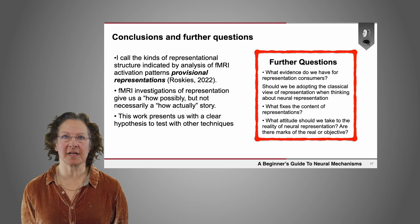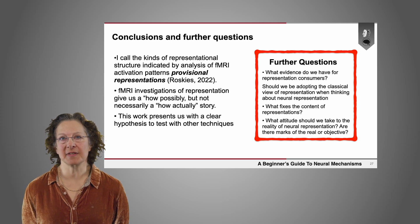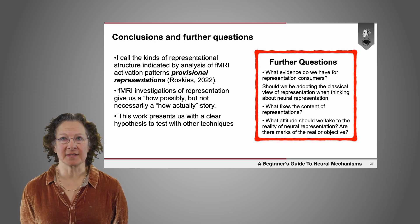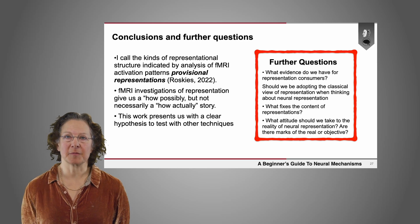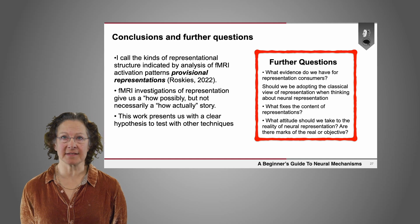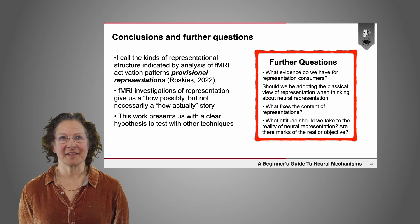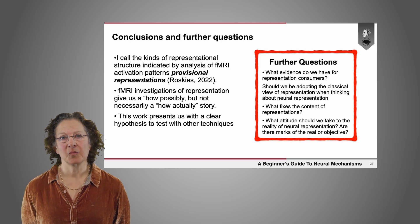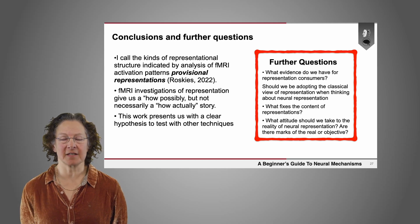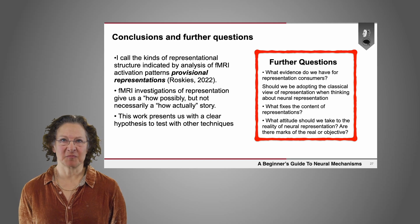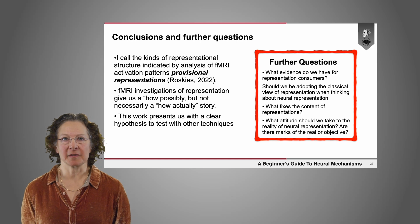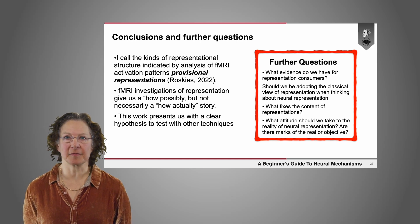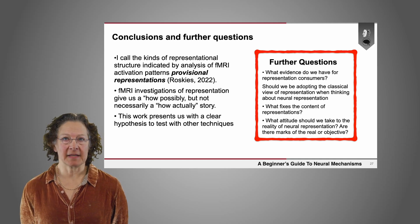There are a number of further questions this work engenders. What evidence do we have for representation consumers — do we have any way of getting at downstream processes that read out the information seen with fMRI? Should we be adopting the classical view of representation, making vehicle-content distinctions? They've worked well in thinking about computation, but is that what the brain is doing? What fixes the content of these representations — why is the content a face rather than its outside representation or anything else that overlaps with what we're looking at? And what attitude should we take to the reality of neural representation — are there marks of the real and objective, or are we essentially seeing what we want to see in the data?